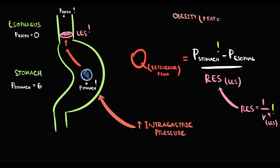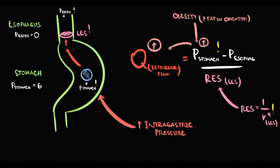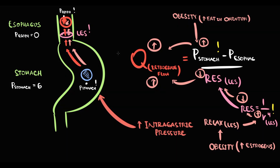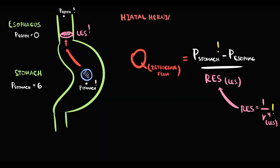Another factor is obesity. In obese patients, the amount of fat in the omentum is very high, and such an enlarged omentum creates high intra-abdominal pressure and thereby high intragastric pressure — increasing the pressure difference and creating retrograde flow. Also in obese patients, estrogen levels are significantly higher than normal, causing relaxation of the lower esophageal sphincter, increasing its radius, decreasing resistance, and increasing retrograde flow. These two factors combined cause retrograde flow of stomach content into the esophagus — this condition we call GERD.